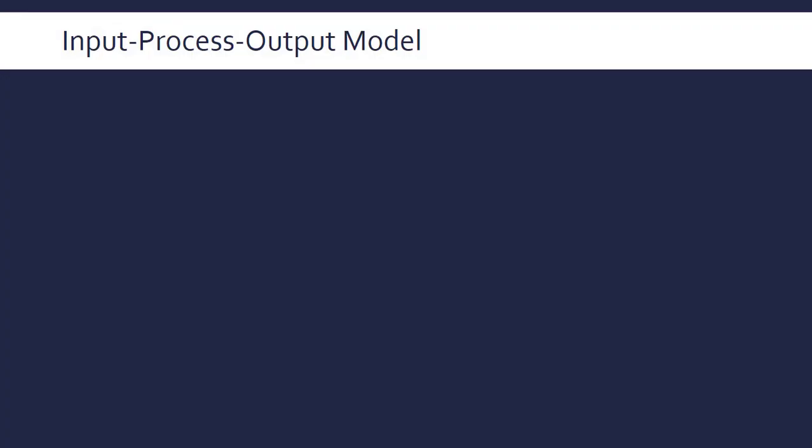Hi, this is going to be a quick look at the input process output model, the IPO model. It's an abstract way of describing the structure of a system or algorithm and it's actually used not only in computer science but in various completely separate disciplines like manufacturing and management.